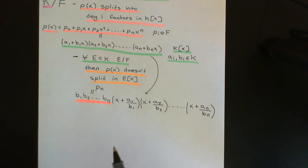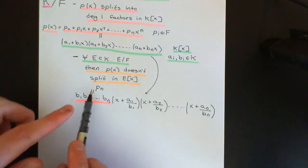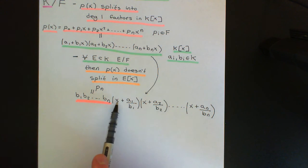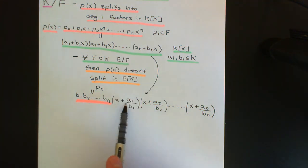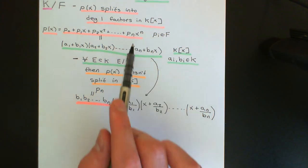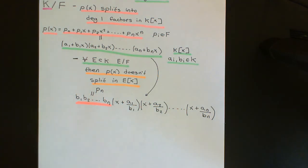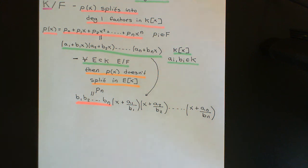The product B₁·B₂···Bₙ is actually equal to the leading coefficient Pₙ from the original polynomial. Why? Because F is just a subfield of K, so Pₙ is a valid member of K. And when you multiply all these factors together, the leading coefficient in front of the Xⁿ term is just 1, so to match the original polynomial we need B₁·B₂···Bₙ = Pₙ.